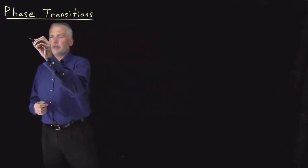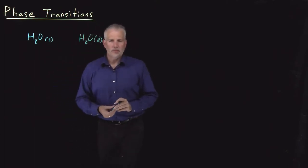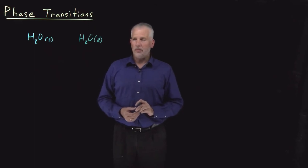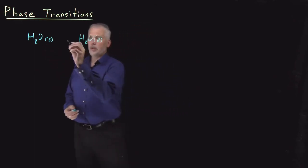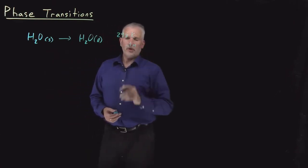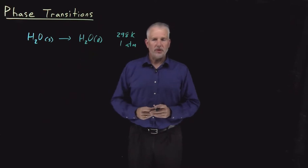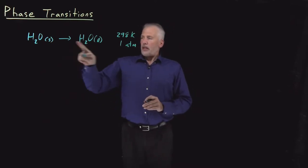With what we know about free energies, spontaneity, and thermodynamic relationships, we can put all those pieces of information together and start to learn about phase transitions — changes of phase between two different phases of matter. For example, ice and water, the solid and the liquid forms of water. We know that at room temperature and pressure, 298 Kelvin and one atmosphere, it's a spontaneous process that solid ice will melt.